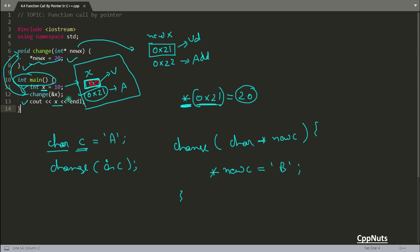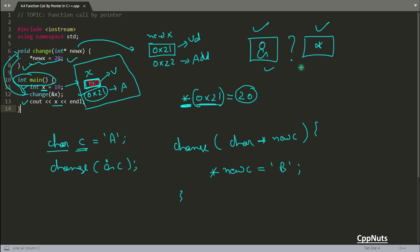So that's what function call by pointer means — it's really simple. If you want to change something, send the address, don't send by value. You can also achieve the same behavior using function call by reference, which I've already covered. In a future video, I'll discuss the differences between passing by reference and passing by pointer. Thanks for watching!